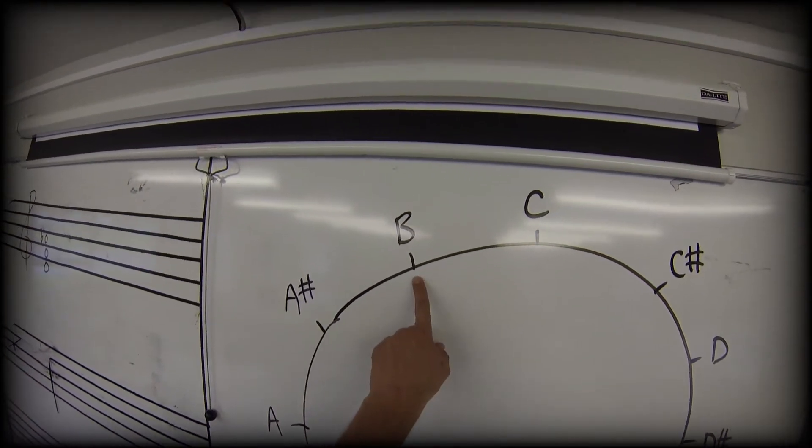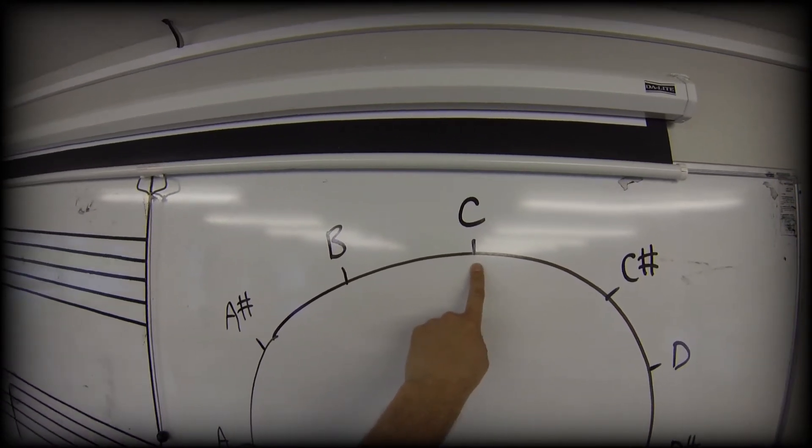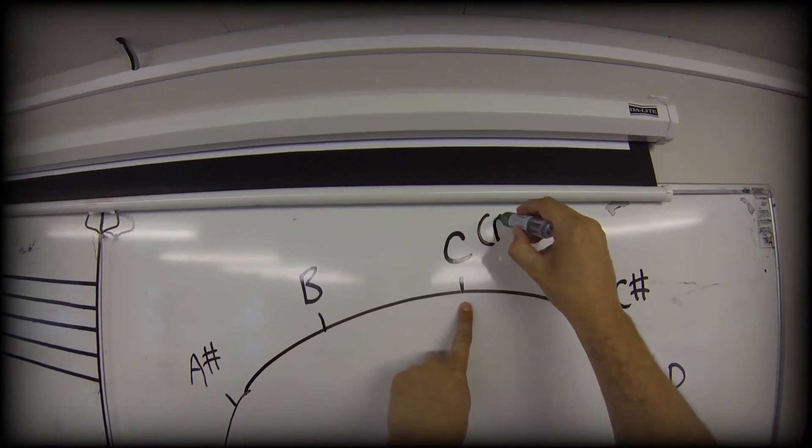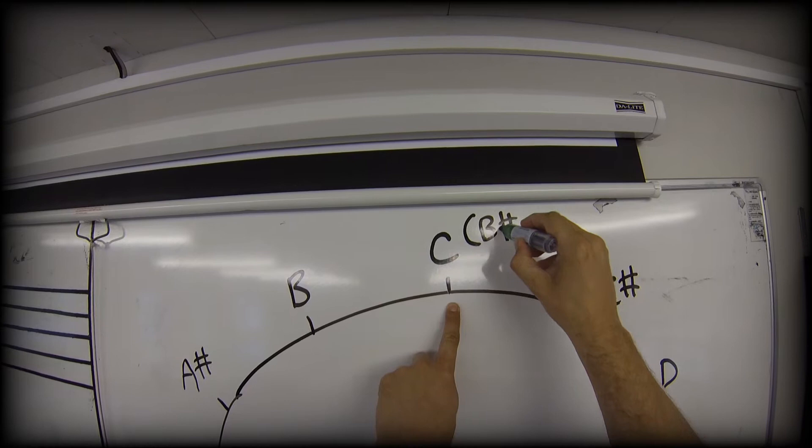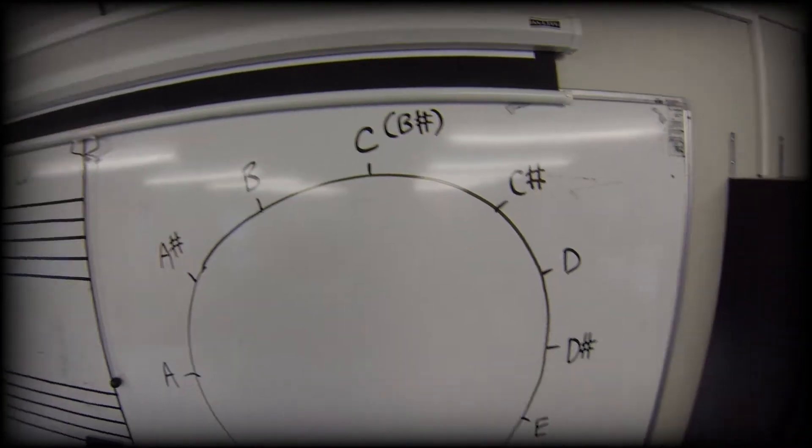So what happens if we sharpen a B? Well, we end up on that step of the clock. So we can actually call this an alternative name. We can call this part of the clock B sharp, and we have to just sometimes.